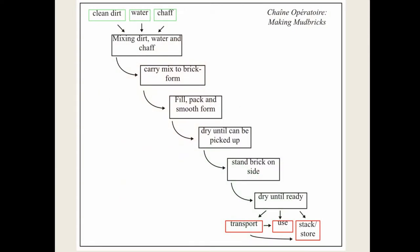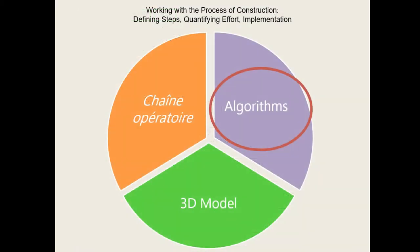Mud brick production — in terms of the sequence at one level — involves how to go about making mud bricks. This we know from a wide variety of sources: experimental, textual, and based on the archaeological record. The process involves mixing dirt, water, and chaff; carrying and filling the mold; letting it dry; standing it up so it dries better; and then it can be transported, used, or stored.